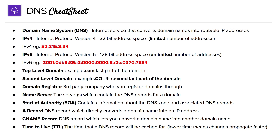And then we have TTLs — it's the time that a DNS record will be cached for. And the lower that time, the faster it will propagate or update.